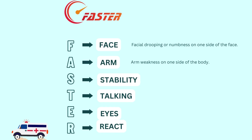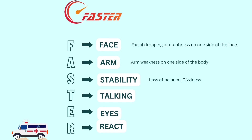A is for arms: arm weakness on one side of the body. S is for stability: inability to maintain balance and stay steady on one's feet, that is, dizziness.